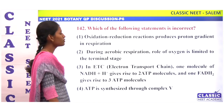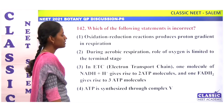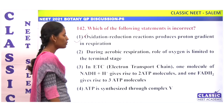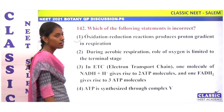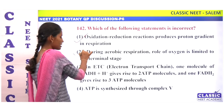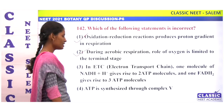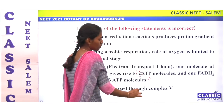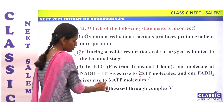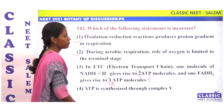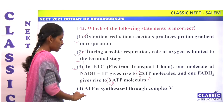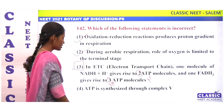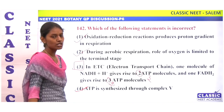Which of the following statements is incorrect? Oxidation-reduction reaction produces proton gradient in respiration — correct. During aerobic respiration, the role of oxygen is limited to a terminal stage — correct. In ETC, one molecule of NADH2 gives rise to 3 ATP and one molecule of FADH2 gives rise to 2 ATP. ATP is synthesized through complex 5 — correct. Statement 3 about NADH2 and FADH2 is incorrect. Option 3.